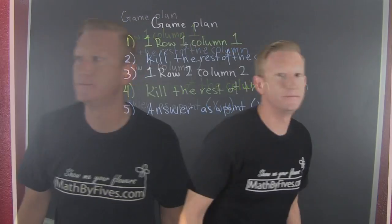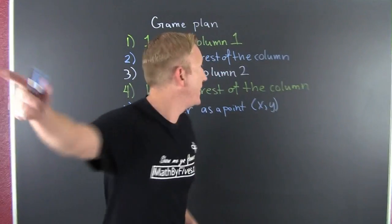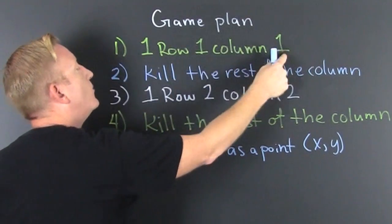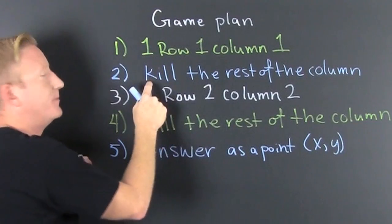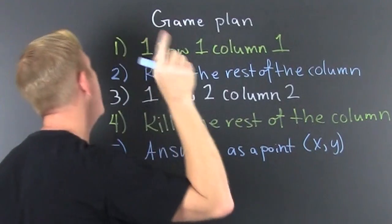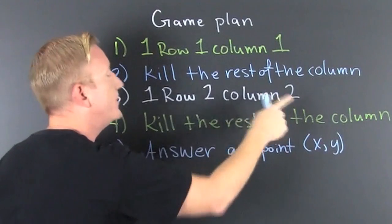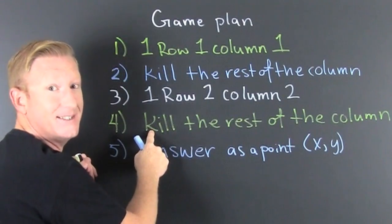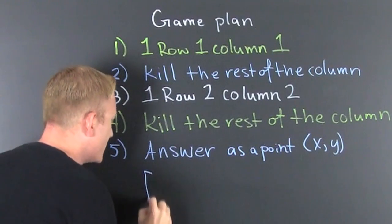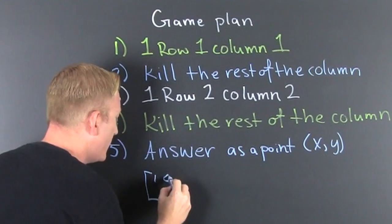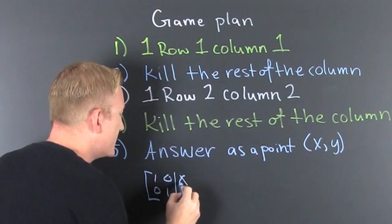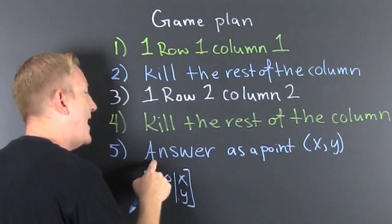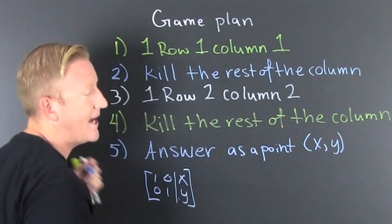This is the game plan. Get a 1 in row 1, column 1. Then kill the rest of that column, meaning get zeros. And then get a 1 in row 2, column 2. Then kill the rest of the column, meaning getting zeros. At that point, you're going to be left with something like 1, 0, 0, 1, x, y. Except those are going to be numbers. And those are the numbers when you answer the point. Answer as a point.